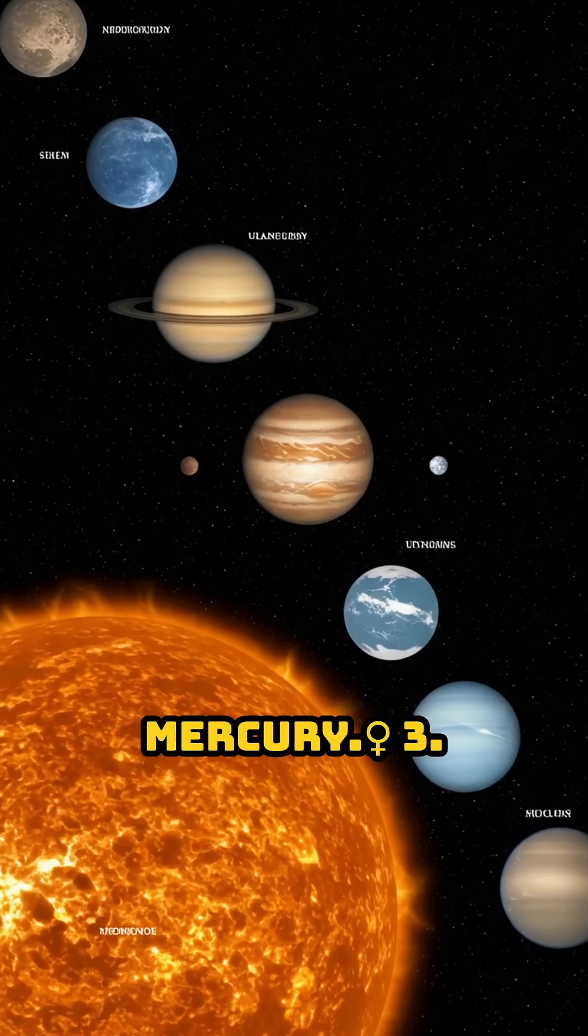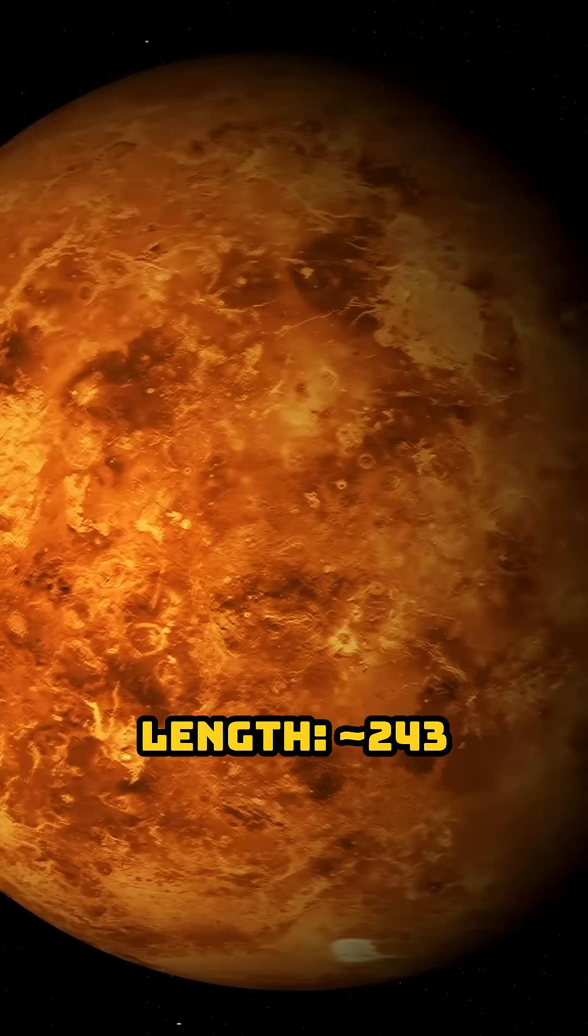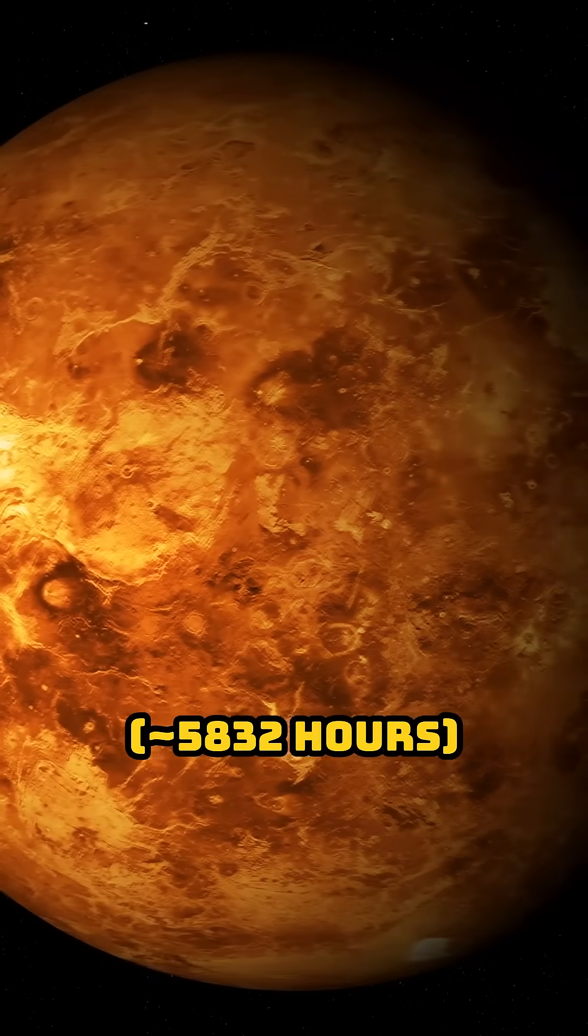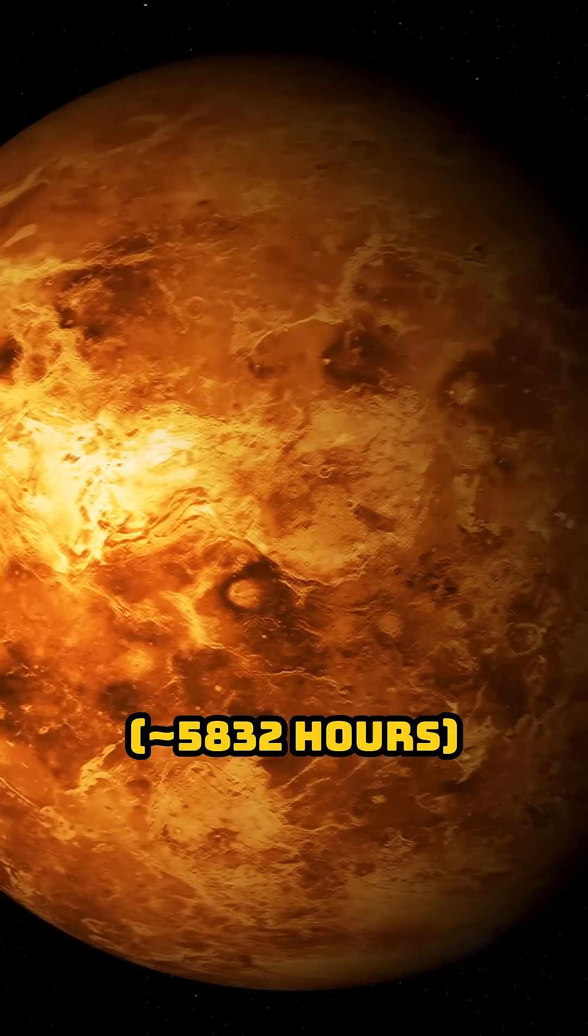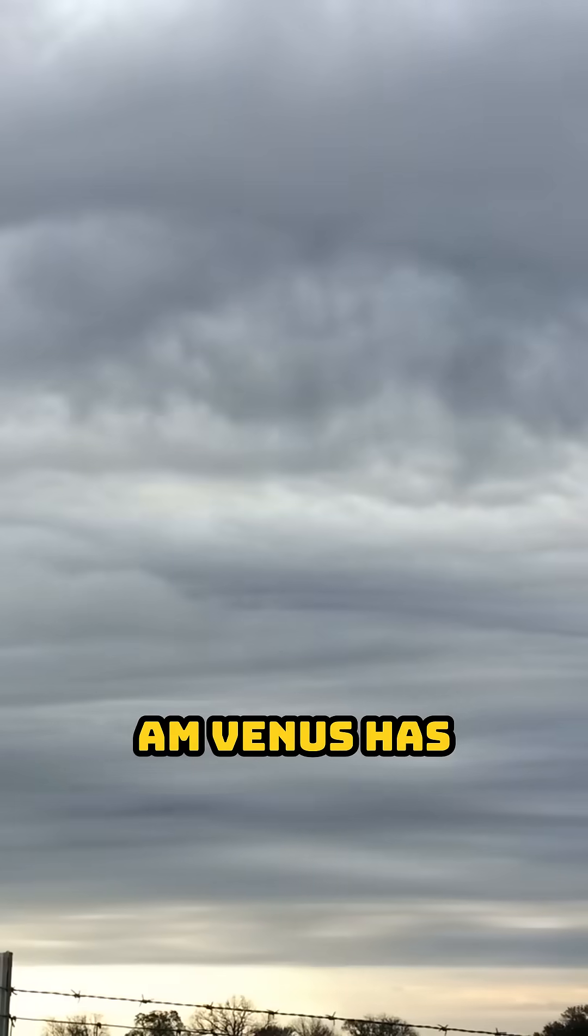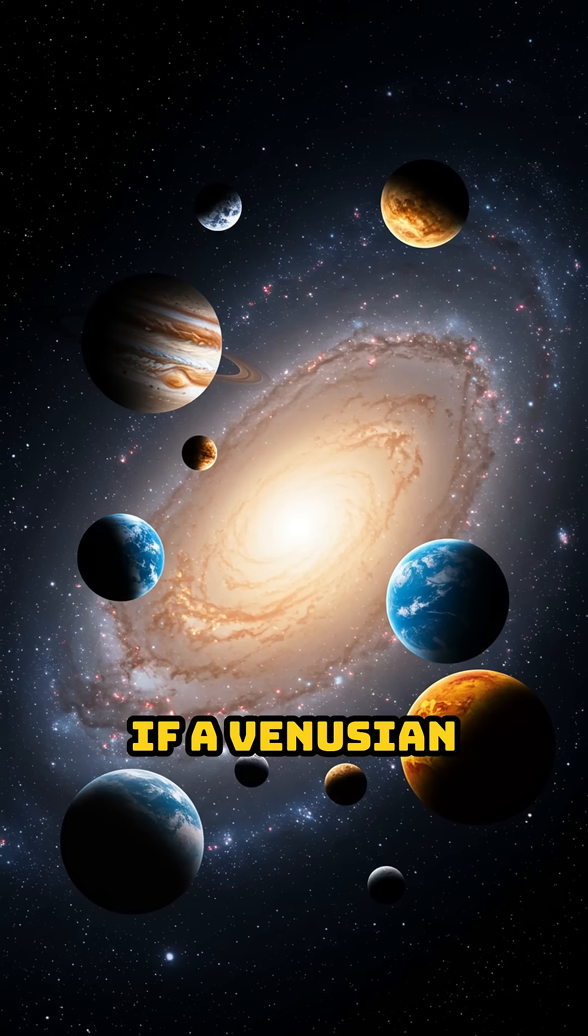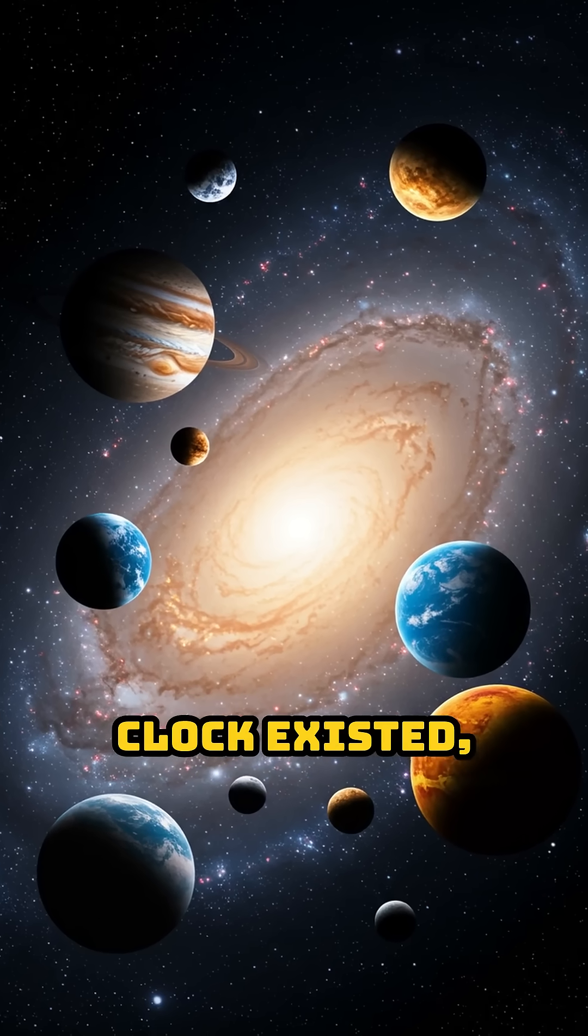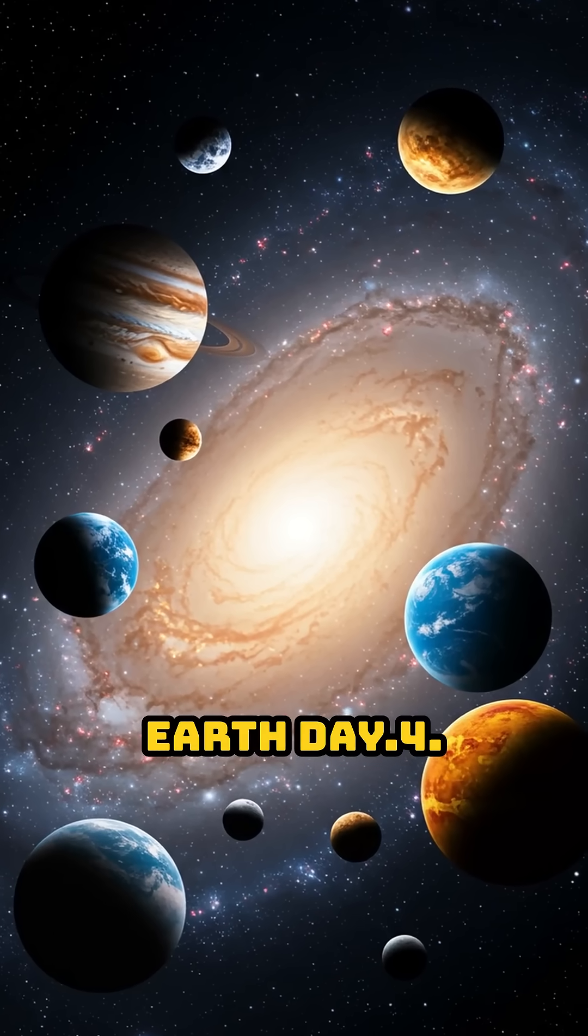Number 3: Venus. Day length 243 Earth days, 5832 hours. Current time just after midnight. Venus has the slowest rotation. If a Venusian clock existed, it'd barely tick over in an Earth day.